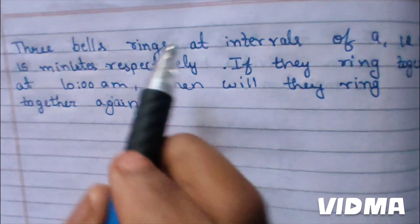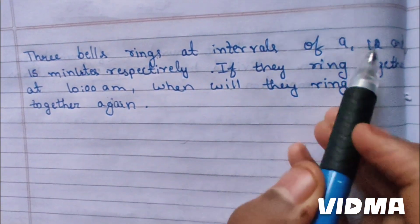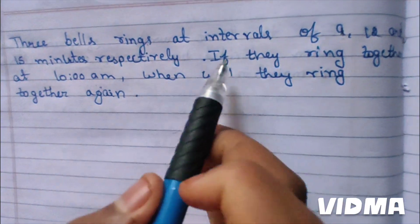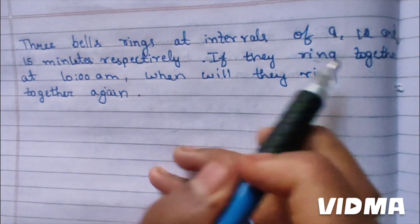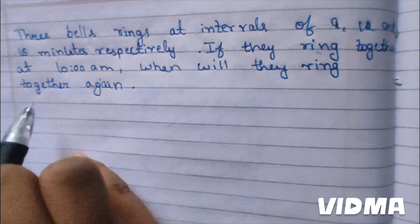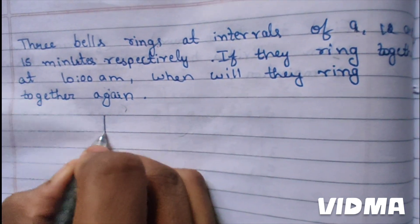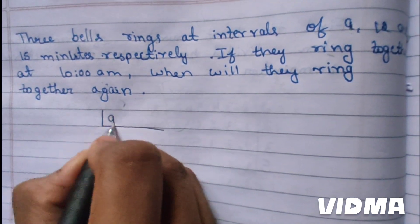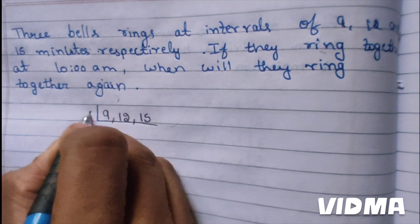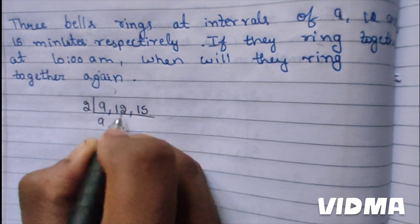Three bells ring at intervals of 9, 12, and 15 minutes respectively. If they ring together at 10 AM, when will they ring together again? First, we have to find the LCM of 9, 12, and 15.